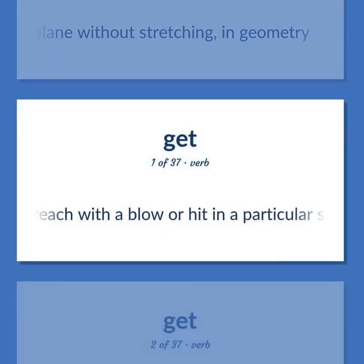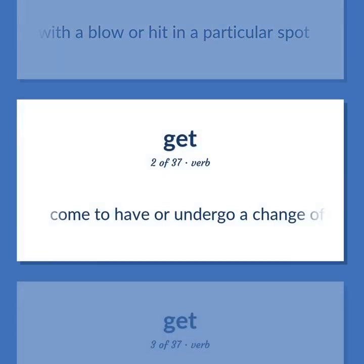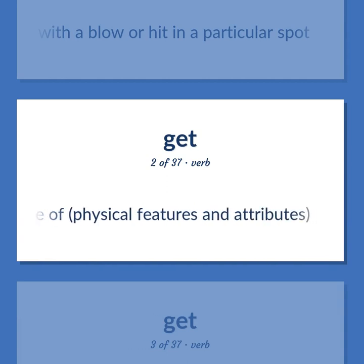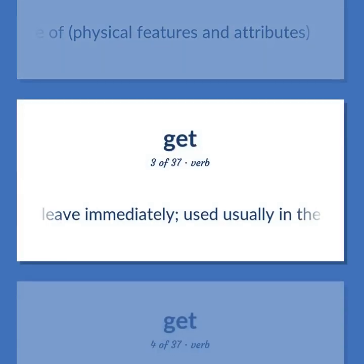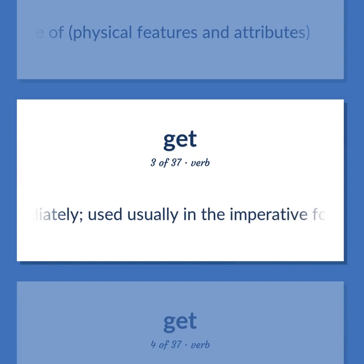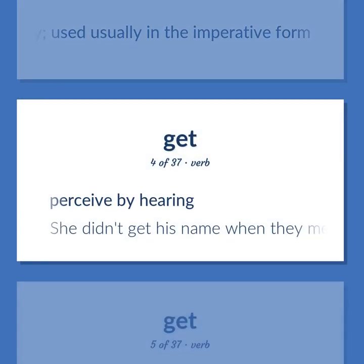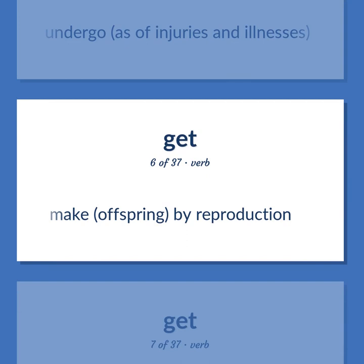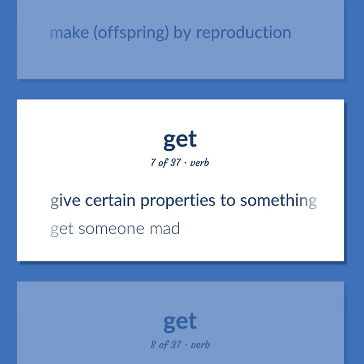Get: Reach with a blow or hit in a particular spot. Come to have or undergo a change of physical features and attributes. Leave immediately — used usually in the imperative form. Perceive by hearing — she didn't get his name when they met the first time. Undergo, as of injuries and illnesses. Make offspring by reproduction. Give certain properties to something — get someone mad.